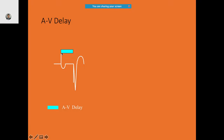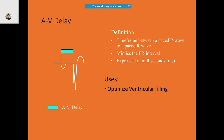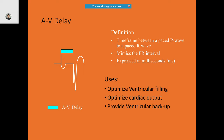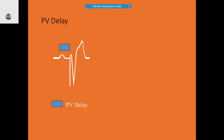AV delay is defined as the time frame between a paced P wave and the paced R wave, forming the PR interval. It is always expressed in milliseconds because these are very small time intervals. AV delay is used for optimizing ventricular filling, optimizing cardiac output, and providing ventricular backup.